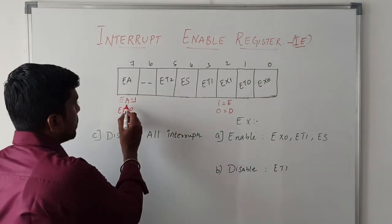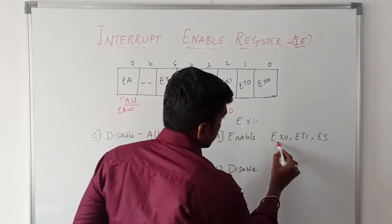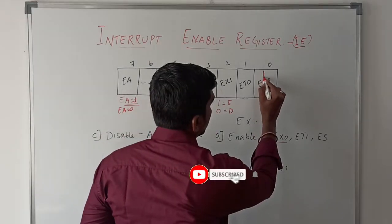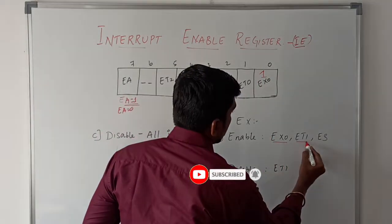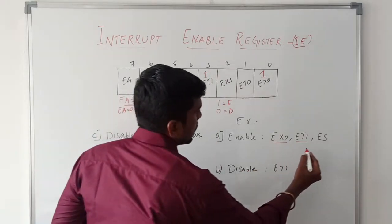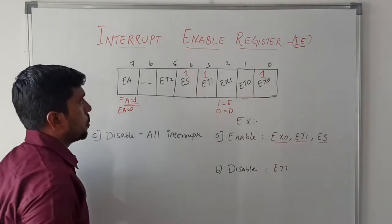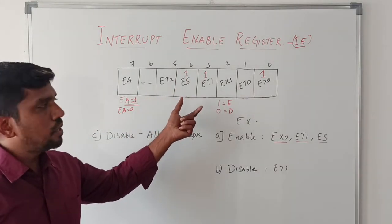First you should enable the EA value, so EA value is set to one. Then EX0, so EX0 is set to one. ET1, so bit one, bit three is set to one. And EX0 is set to one. So bit three is set, bit one is one.